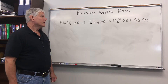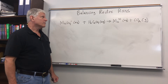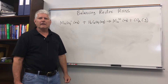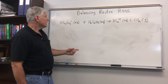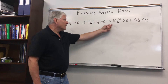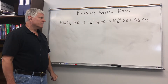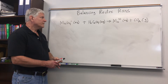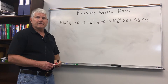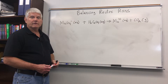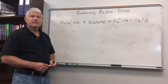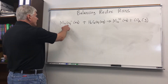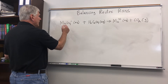Now let's look at the rules for balancing redox reactions. Redox is a shorthand way of saying oxidation-reduction reactions. Here is a redox reaction in which electrons are transferred, and it's not obvious which atoms have gained and lost electrons, so we will assign oxidation states for each atom in the reaction to keep track of that.